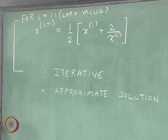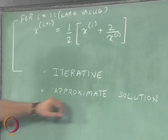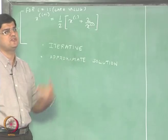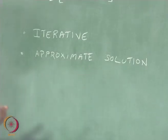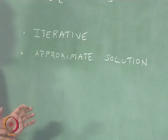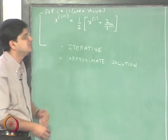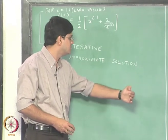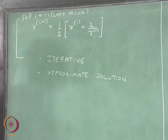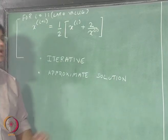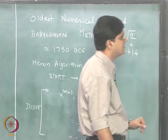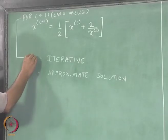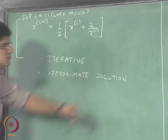The solution that we are going to get for the square root of 2 is not going to be an exact solution, but it is going to be an approximate solution. We can specify up to what level we want to go when we solve this problem, and based on those specifications we will get this approximate solution. At a certain point, we will say we are happy with this approximate solution because we do not care about, say, the tenth digit after the decimal point. The Heron algorithm is an iterative algorithm and it gives you an approximate solution.